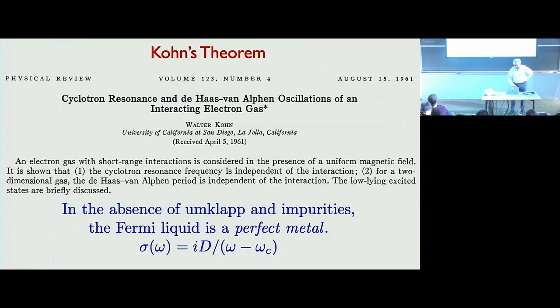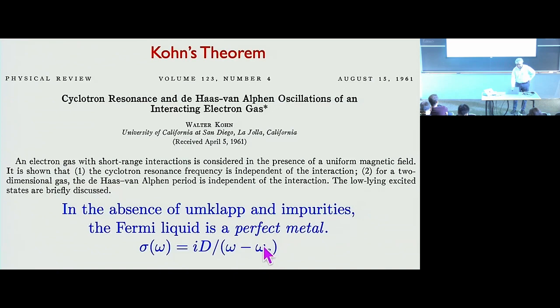Being in Kohn Hall, it's good to begin with Kohn's theorem, which is really the fundamental thing behind this claim. What Kohn showed was that in the absence of Coulomb impurities, the Fermi liquid is a perfect metal. The optical conductivity of the Fermi liquid is just a pure delta function at the cyclotron frequency.